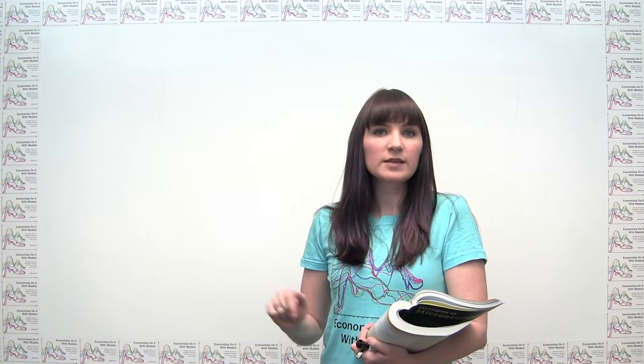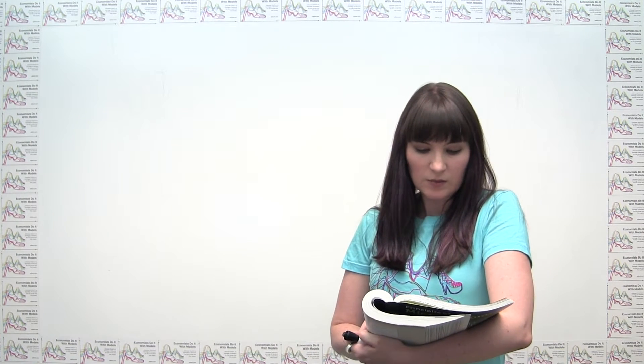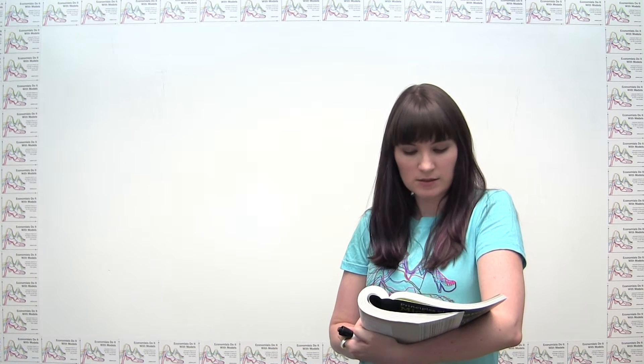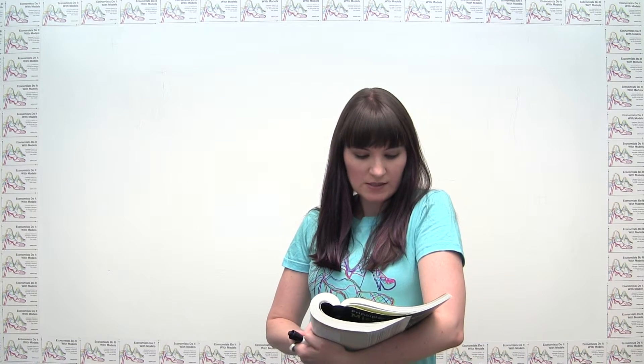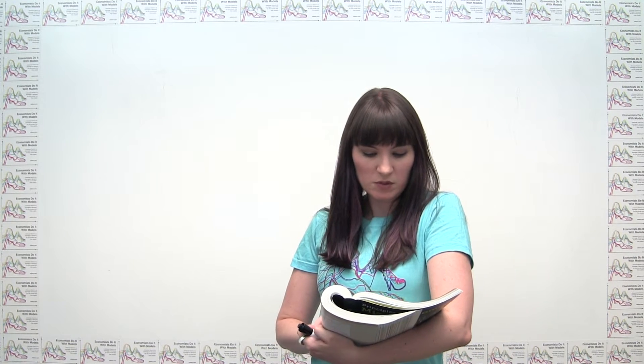Hey everybody! Today's practice problem comes from Principles of Microeconomics by Dirk Mateer and Lee Coppock. We're going to be doing chapter six, problem number six. The problem begins as follows: a new medical study indicates that eating blueberries helps prevent cancer. If the demand for blueberries increases, what will happen to the size of the consumer and producer surplus?